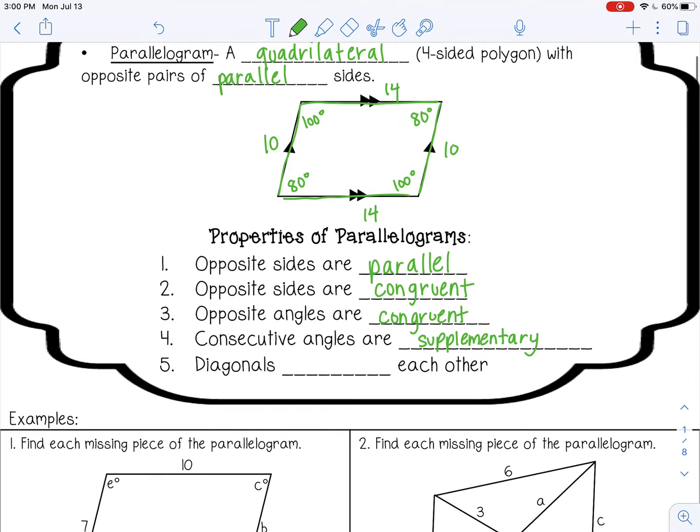And then the last property says that the diagonals of a parallelogram bisect each other. So here's a diagonal, here's a diagonal. They're going to cut each other into equal pieces, so those two pieces will be equal, and these two pieces will be equal.